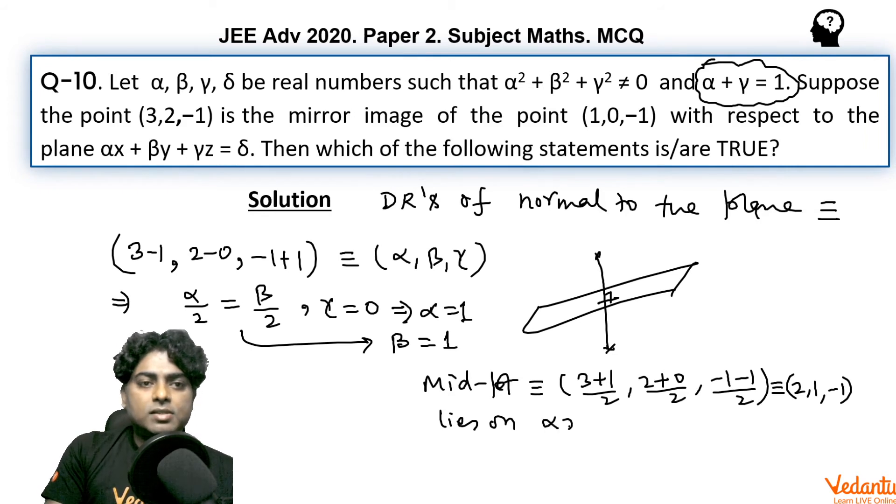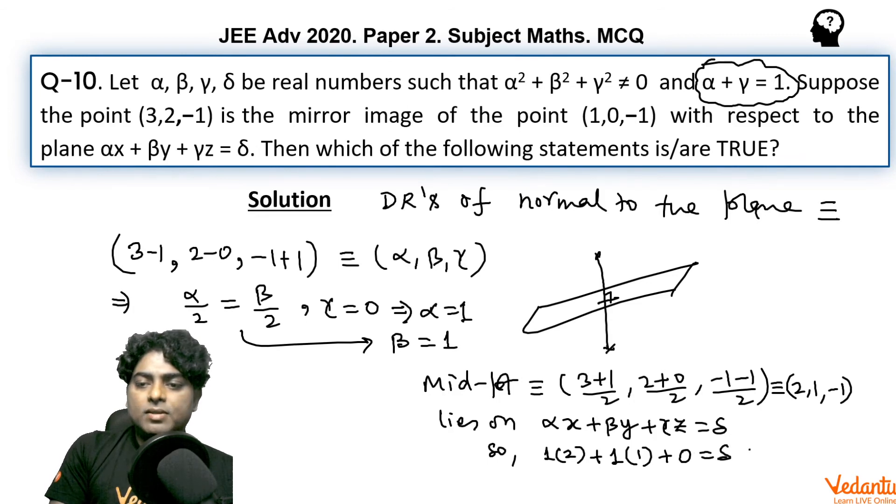Now as α, β, γ are now known to us, so 1 times the x coordinate of the point 2, plus 1 times y coordinate of the point as 1, γ is zero, equals δ. So the value of δ would be obviously 3.